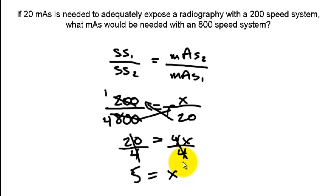So if you notice, the original screen speed, if you had multiplied that times 4, that would give you the new screen speed. So the new screen speed is 4 times the old. So if you can divide your original mAs by 4, because we know it's inversely proportional.